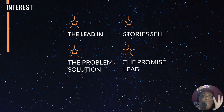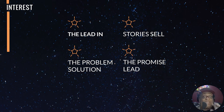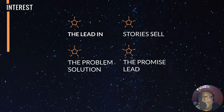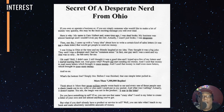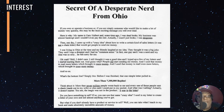Interest is the next letter — I. After we've caught their attention, we want to keep that attention, so we've got to get them interested. The best thing to do is tell a story. Remember, stories sell. Going back to Gary Halbert, let's talk about the promise lead, which is a big one — the if-then proposition: 'If you own or operate a business, or if you are simply someone who'd like to make a lot of money very quickly, this may be the most exciting message you will ever read.' Right after that, he goes into: 'Here's why. My name is Gary Halbert and some time ago I was dead broke.' He's telling a story.